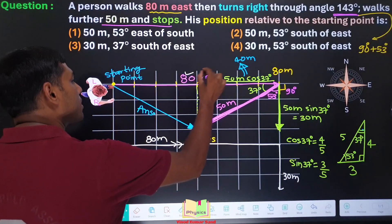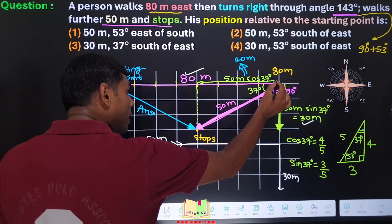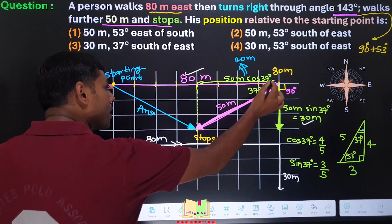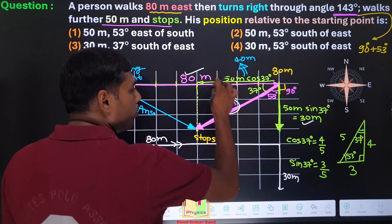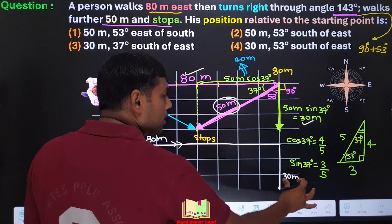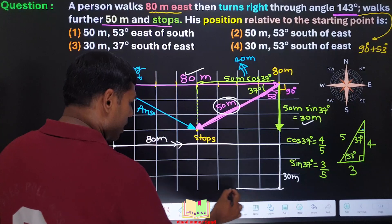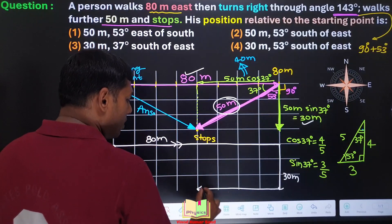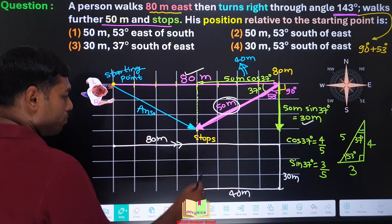We have taken this 80 meters into consideration, we have taken this 30 meters into consideration. Then he goes 40 meters in this direction, the west direction. See, this 50 meters has been broken into two components, so we have taken this 30 meters here. Now this 40 meters, let me show here, like this. This is 40 meters, and here he stops.